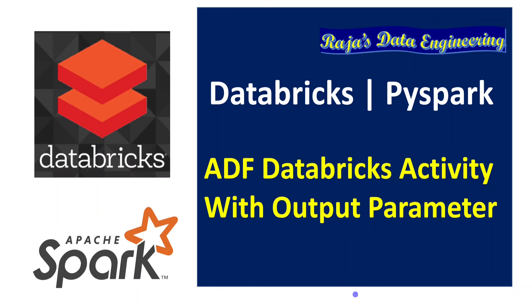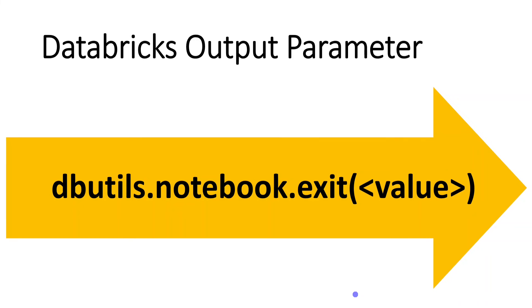In my previous video, I explained how to pass input parameters while calling a Databricks notebook with an ADF environment. In this example, I'm going to cover how to get output parameters as well. In order to get an output parameter from a Databricks notebook, we have to define the logic to return some value to the caller. When we execute the Databricks notebook, at the end of execution, it should return some value to the caller using the dbutils.notebook.exit syntax. Based on the decision, various other processes can be triggered in the orchestration, which is why this output parameter is important for certain ETL pipelines.